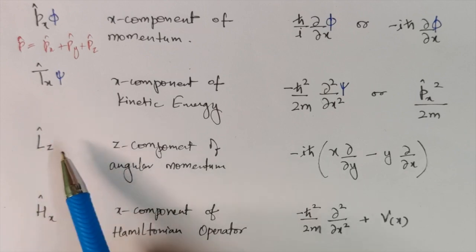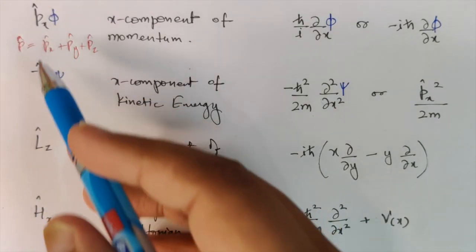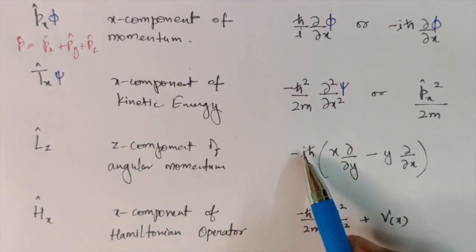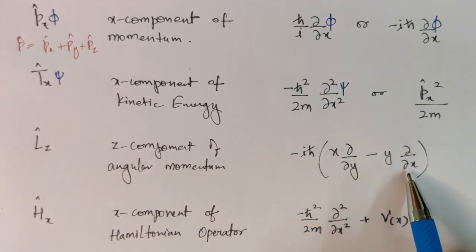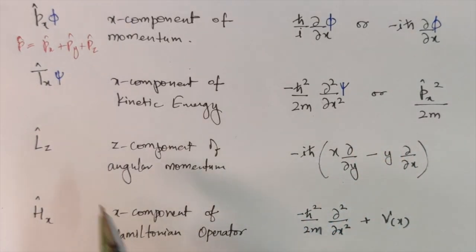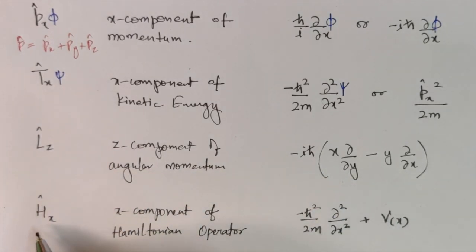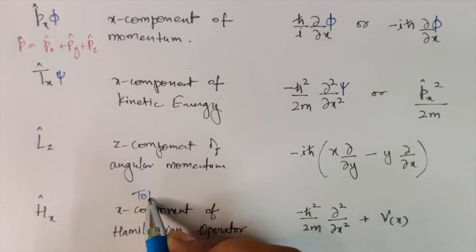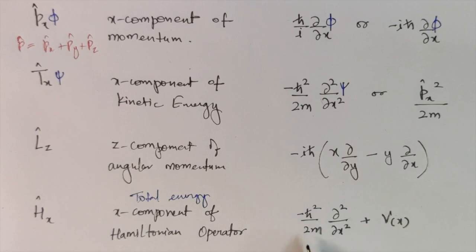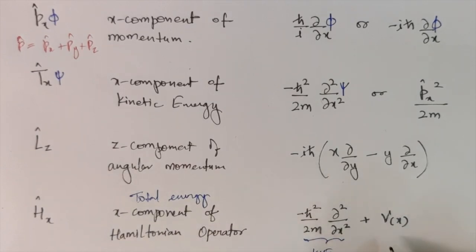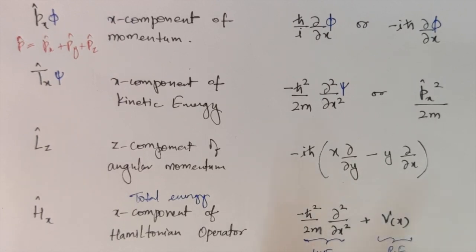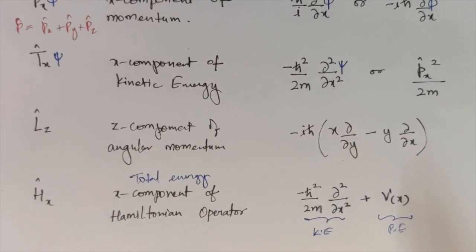The angular momentum operator has three components. Lz is given by −iℏ(x·∂/∂y − y·∂/∂x). The Hamiltonian operator, also called the total energy operator, is the sum of the kinetic energy operator and the potential energy term. So the total energy operator equals kinetic energy plus potential energy components.